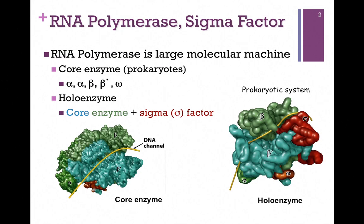The core enzyme is composed of 5 subunits: 2 alpha subunits, beta, beta prime, and omega. We have an illustration of a surface model of the core enzyme on the lower left of your screen, and the different subunits are differentially colored so that you can see how they are related to one another. You're not responsible for the details of this structure. The channel through which the DNA passes is highlighted in yellow.